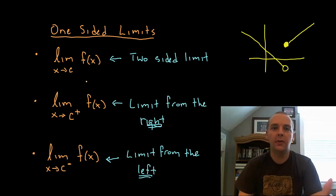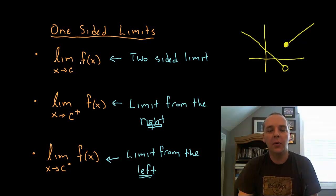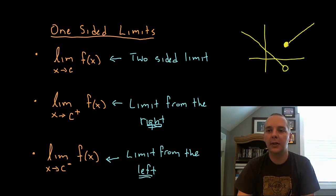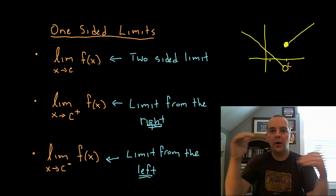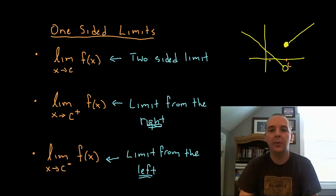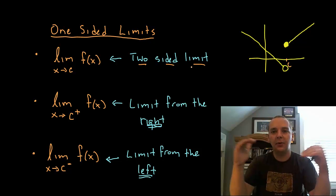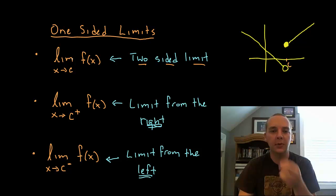In this video we're going to discuss one-sided limits. Our normal limit notation looks like this: the limit as X approaches a number for a function is blank, and then either the limit exists or it doesn't exist. With a picture like this, we would say that the limit doesn't exist if this is C right here, because the limits aren't going to the same place from both sides. This is what we call a two-sided limit — both sides have to agree in order for the limit to exist.